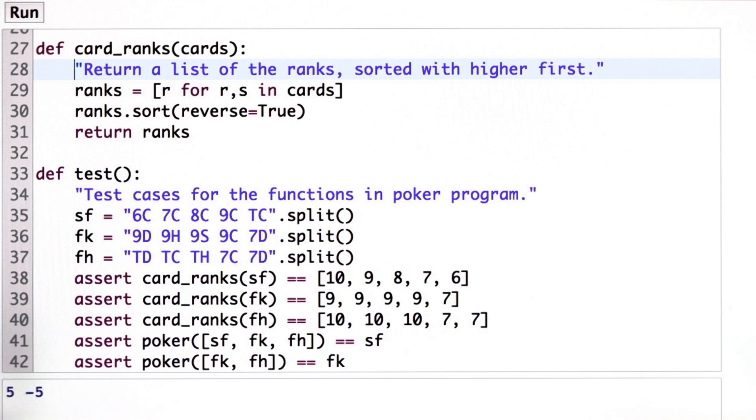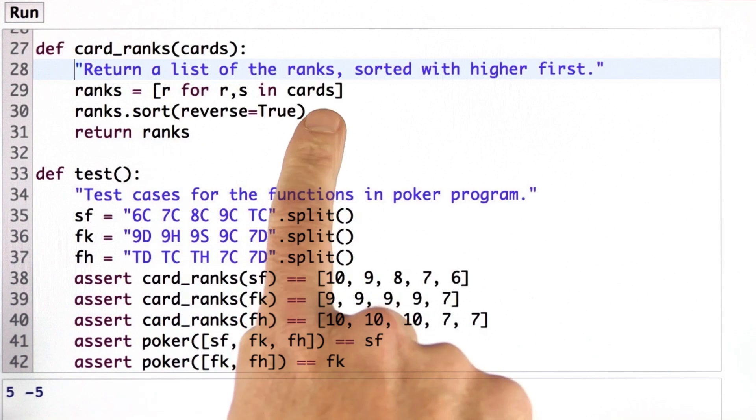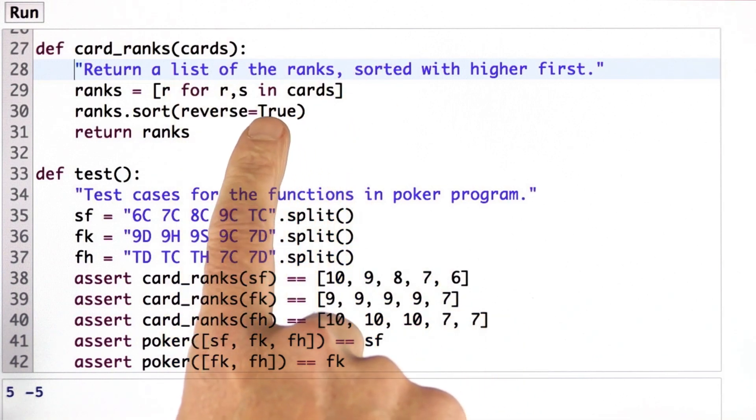Instead we want 10 to map to the number 10 and J to the number 11 and so on. So we're going to have to come up with a way of fixing that, taking these letters that we pulled out of the cards and mapping them into an integer in the correct way.